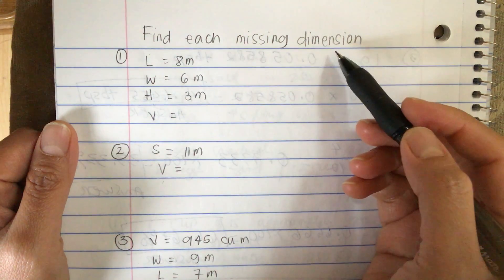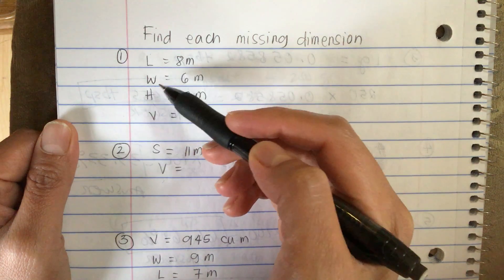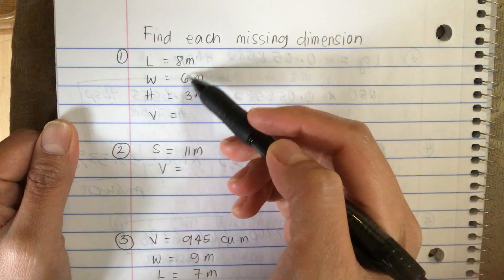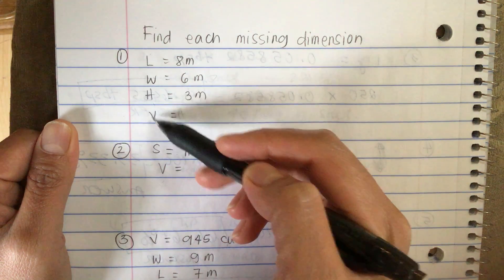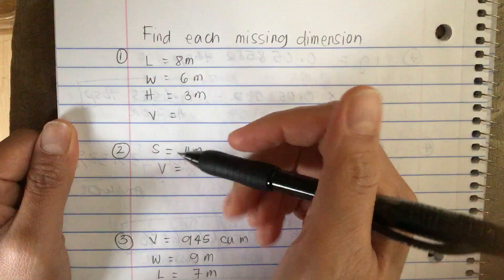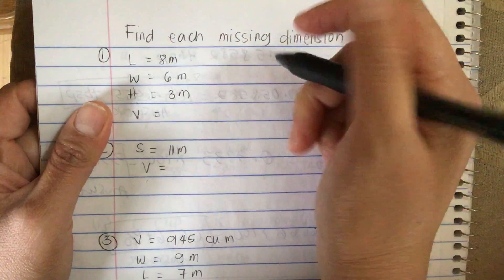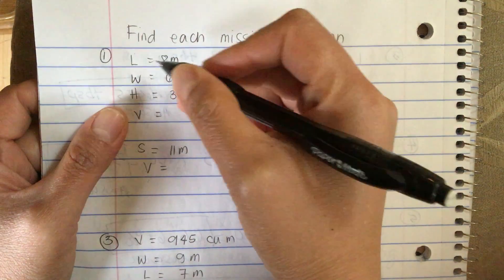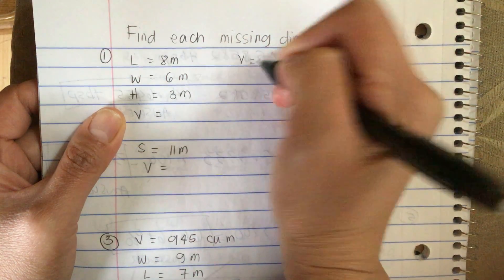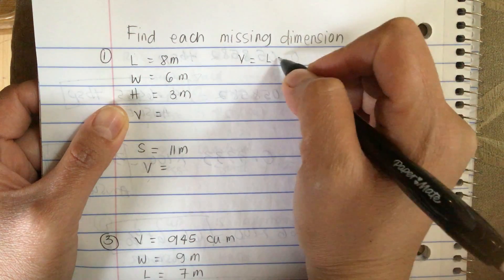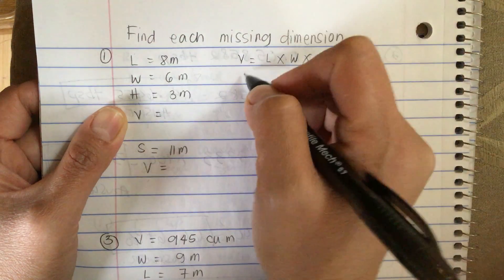Find each missing dimension. They give us the length of 8 meters, the width of 6 meters, and the height equal to 3 meters. Now they want us to find the volume. The volume of a rectangular solid is equal to length times width times height.